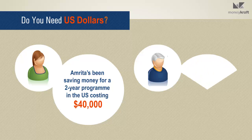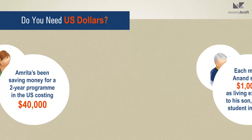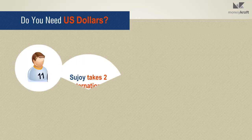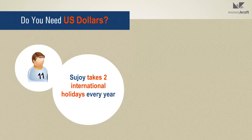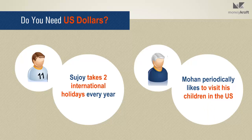Anand's son is studying in the US and has a scholarship, but Anand sends money to his son on a monthly basis for managing his expenses. Sojoy loves to travel and takes two international holidays every year and looks for bargains and offers all the time. Mohan is retired and settled in India. His children live in the US and he likes to visit them periodically.